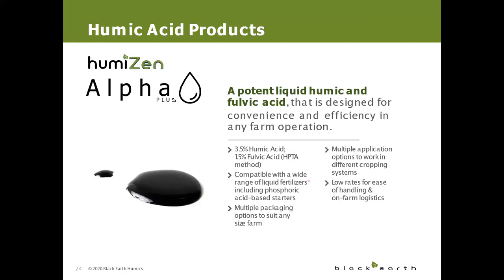Next up, we'll talk about Black Earth's Humizen products, a set of premium products that came out last year. Starting with Humizen Alpha Plus, a liquid humic designed for convenience. The extraction method used in Alpha Plus isolates the fulvic and most of the bioactive humic acids contained in humalite, resulting in a potent liquid humalite. It's compatible with a wide range of liquid fertilizers including phosphoric acid-based starters. Due to its potency, Alpha has lower recommended rates, making it easier for handling and logistics. It can be used as a seed treat, in-furrow, banded with fertilizers, irrigation, and foliar applications.